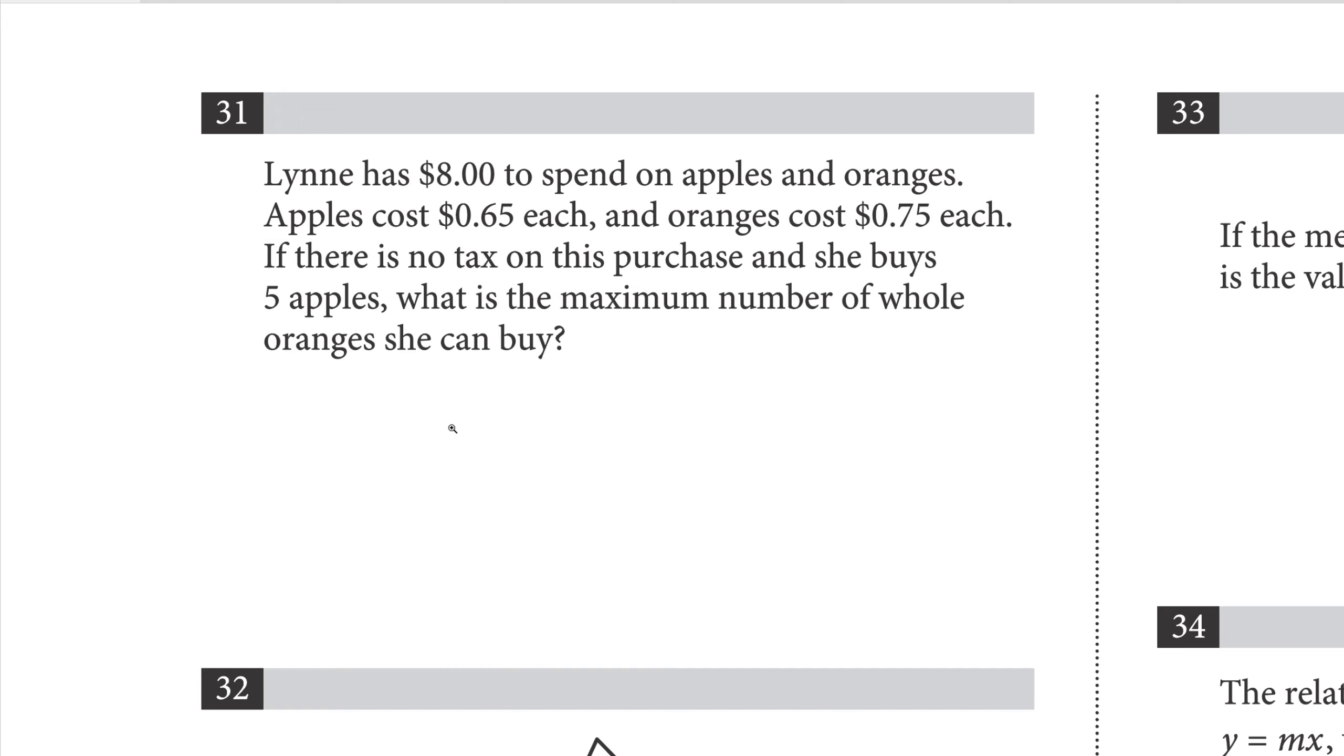Lynn has eight dollars to spend on apples and oranges. Apples cost 65 cents each and oranges cost 75 cents each. If there's no tax on this purchase and she buys five apples, what is the maximum number of oranges she can buy? In total what she has is eight dollars, so let's write that down. The cost for the apples is going to be five times 65 cents.